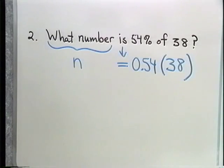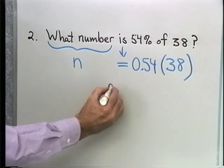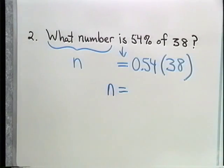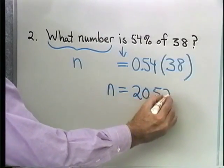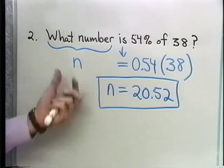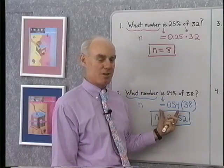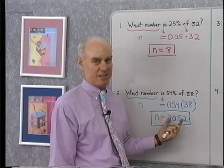So n is equal to 0.54 times 38. When I actually do that multiplication, and I'll do it on a calculator, I end up with n equal to 20.52. A very straightforward process of translation. That gives us an equation to solve. We solve the equation, and that's our solution.